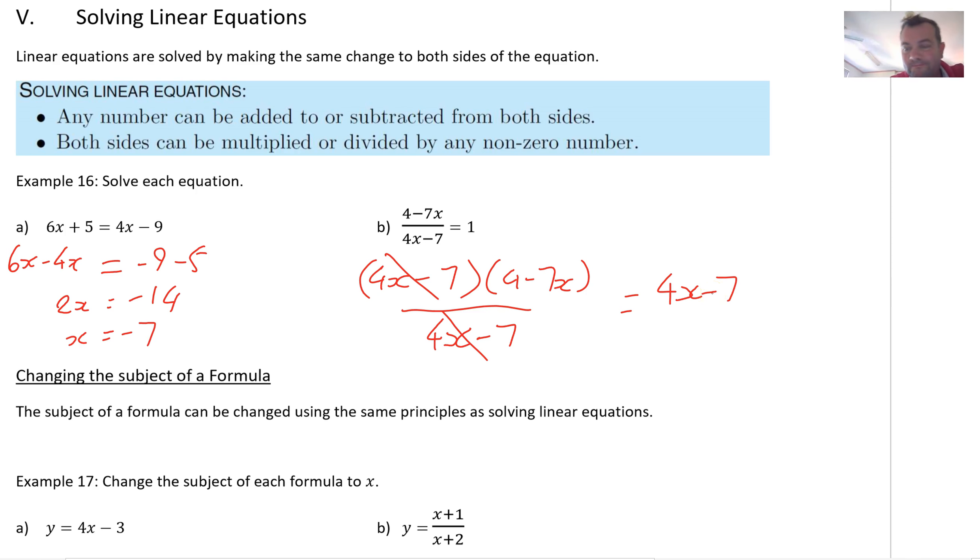I am going to subtract 4x from both sides and subtract 4 from both sides. That tells me I've got negative 11x equals negative 11 and x equals 1. Yep, x equals 1. All good?